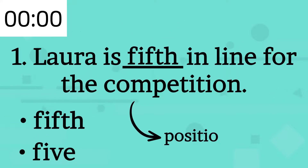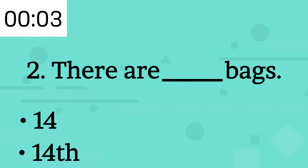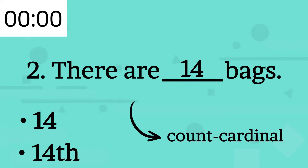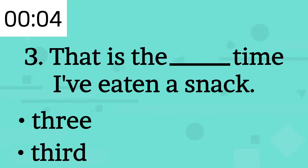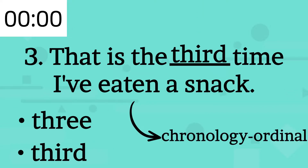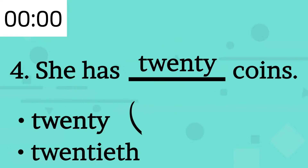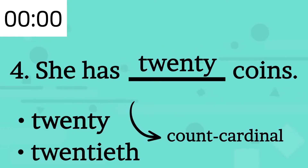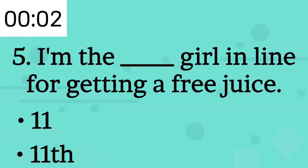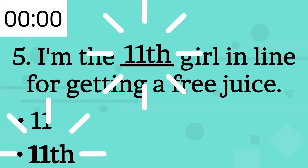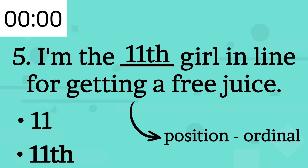Correct! Laura is fifth in line for the competition. Correct! There are 14 bags. Correct! That is the third time I've eaten a snack. Correct! She has 20 coins. Correct! I'm the 11th girl in line for getting a free juice.